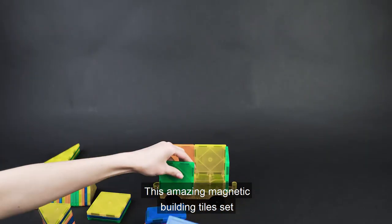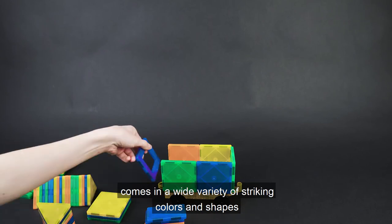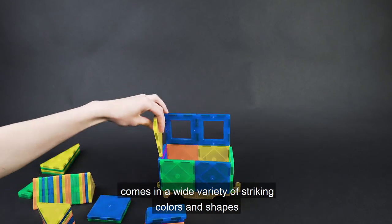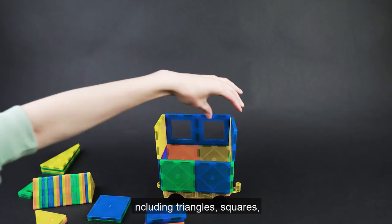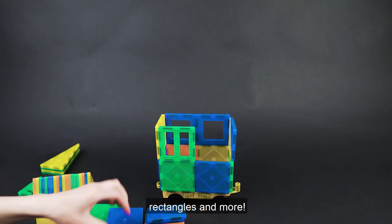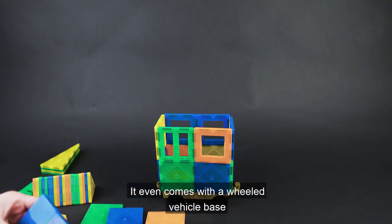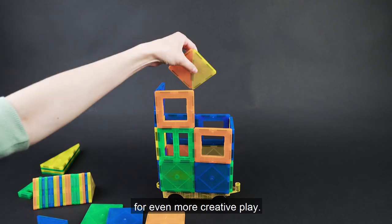This amazing magnetic building tile set comes in a wide variety of striking colors and shapes including triangles, squares, rectangles and more. It even comes with a wheeled vehicle base for even more creative play.